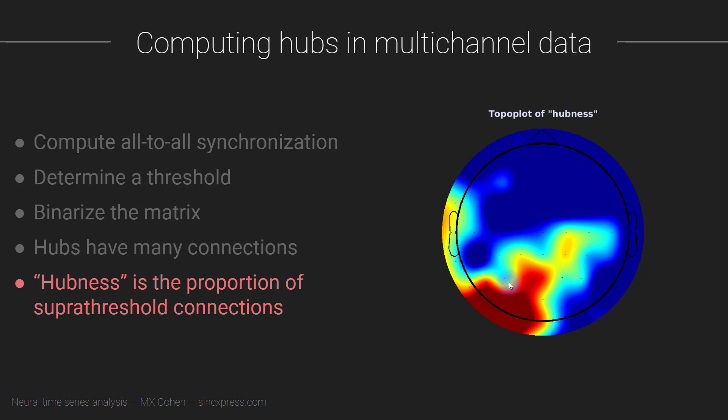That gives you a topographical map, and it looks like this for this dataset at 10 Hz. These are real data. What you see is that in this dataset at 10 Hz, there is strong hubness in left posterior regions in the alpha band. These electrodes have a lot of connections to other electrodes on the scalp, so these are hubs in the alpha band.